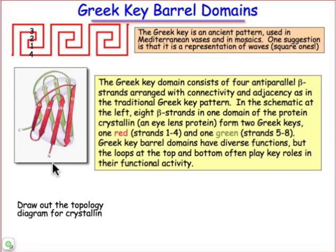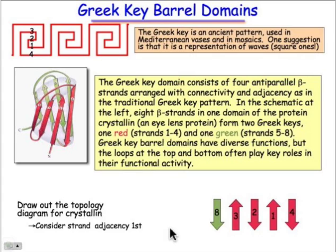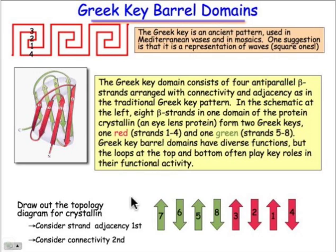Looking at the topology diagram and what's adjacent to one another in space, we can see that strand 3 is adjacent to strand 8 as it forms this circular part of the barrel. Drawing out the topology diagram, we put strand 3 anti-parallel to strand 8 — that's the adjacency. What's next to 3? It's 2, followed by 1, followed by 4. Starting from the other direction, strand 8 is next to 5, which is next to 6, and they're all anti-parallel. That adjacency comes from examining what's next to what in this three-dimensional diagram.